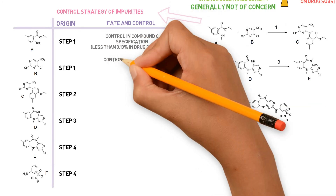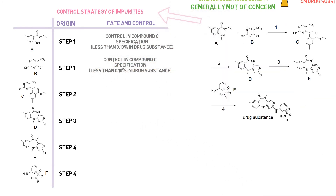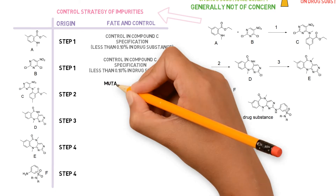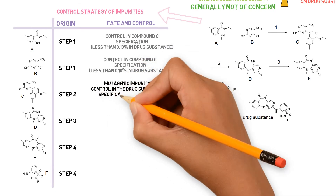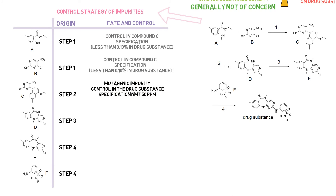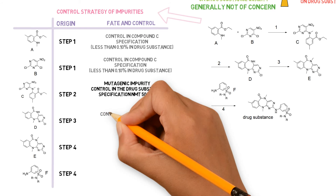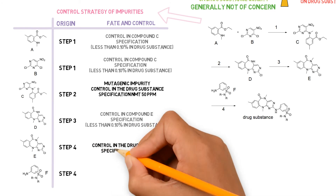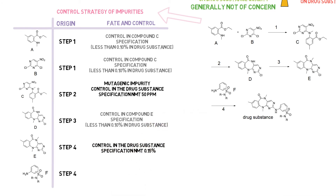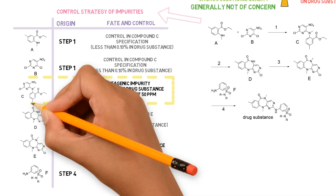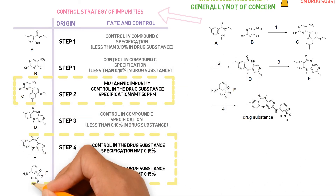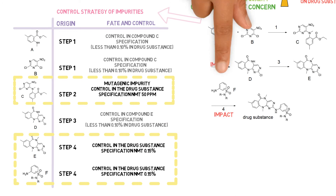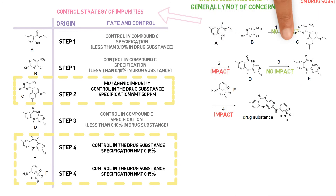The two impurities arising from step 1 are controlled in the specification of compound C. Compound C is a mutagenic impurity which is controlled in the drug substance specification with a limit as described in ICH M7. Compound D is controlled in the specification of compound E. Compounds E and F are controlled in the drug substance specification with a limit of 0.15% each. The drug substance impurity profile consists of impurities C, E, and F. So the steps that impact the impurity profile are steps 2 and 4.